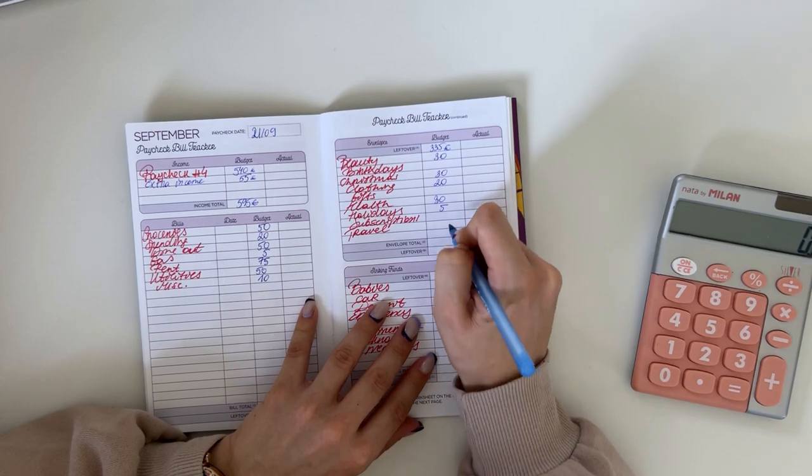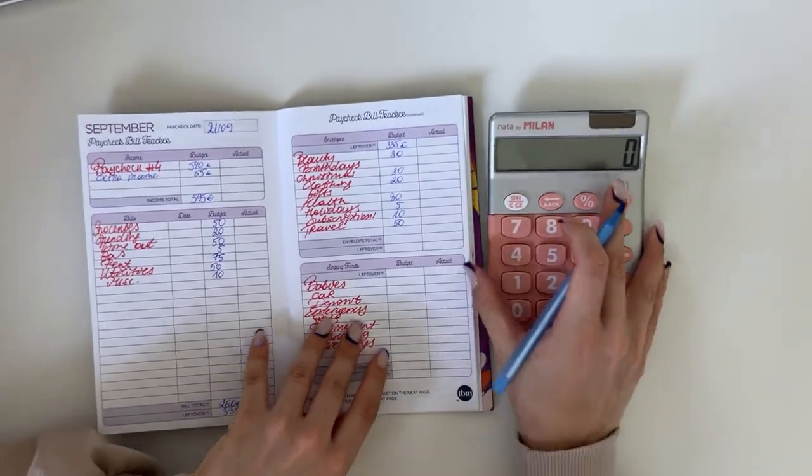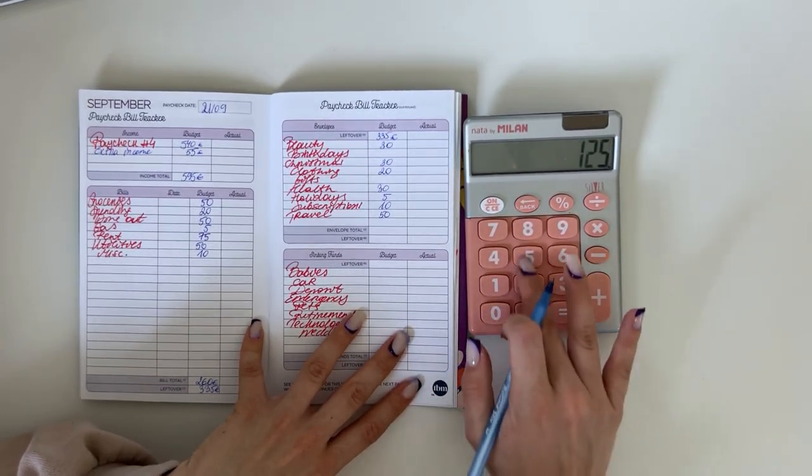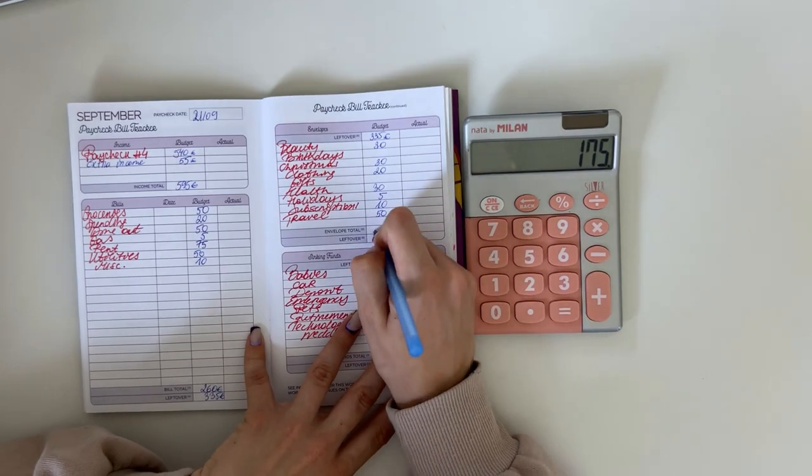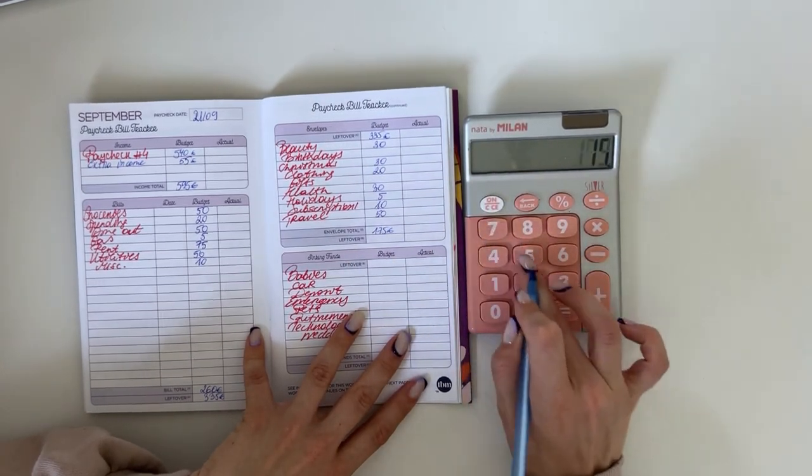5 in holidays, subscriptions is going to get 10, and travel 50. In total that's 30 plus 30 plus 20 plus 30 plus 5 plus 10 plus 50 is 175. So 335 minus 175, we have 160 left.